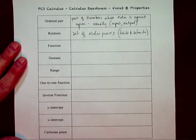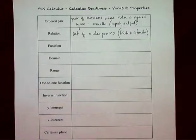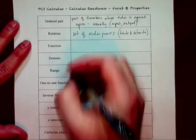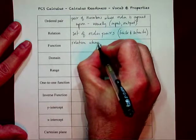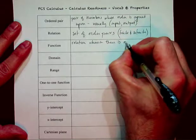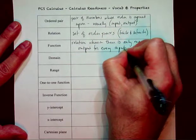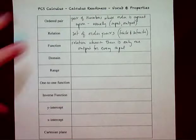Now, a function — usually when we're dealing with functions we're dealing with equations, though they don't necessarily have to be equations. You can actually have a finite relation and evaluate it for whether it's a function. A function is a relation wherein there is only one output for every input. That means no input has more than one output, and that's why the vertical line test works.